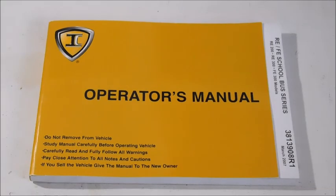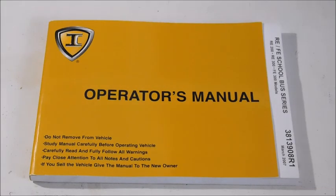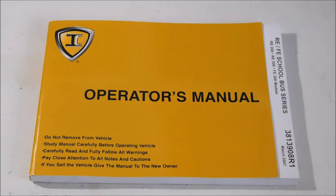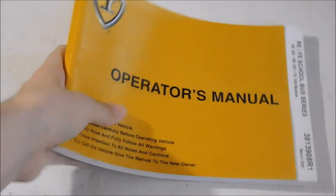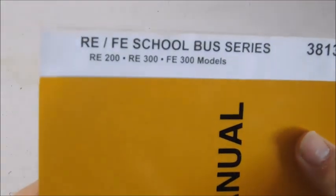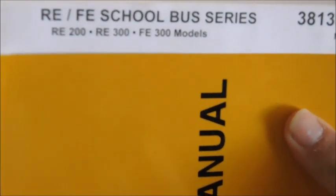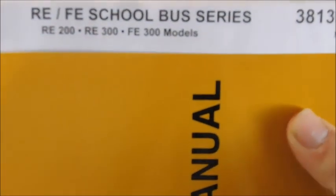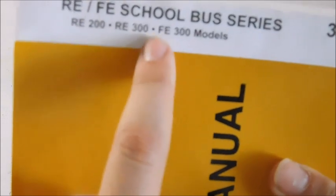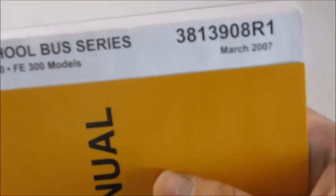Hey guys, what's up? So today I'm doing a video review here of an IC FE RE Operators manual. We're not going to necessarily look through the whole thing, but I'm going to go through it and show you some of the diagrams and stuff like that. Basically on the outside you've got the IC logo operators manual. RE FE school bus series RE 200 RE 300 FE 300, they didn't make an FE 200, and then there's the batch number from March 2007.